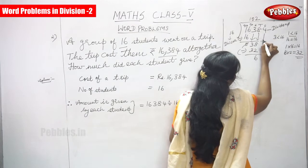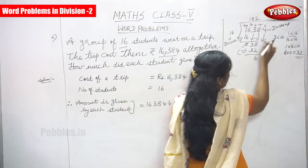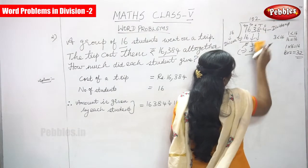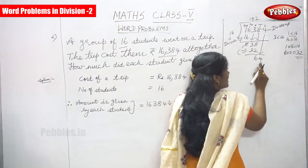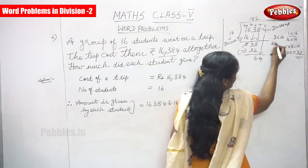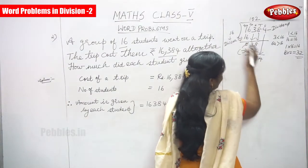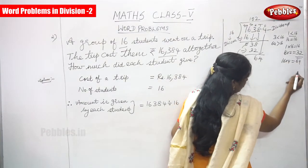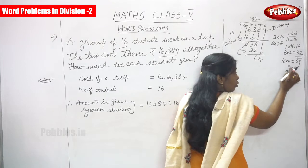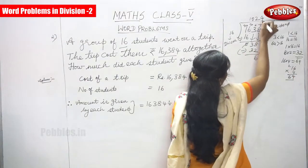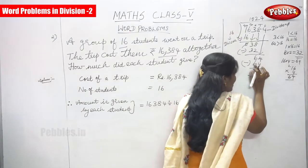Compare 6 with 16 — 6 is less than 16, so you can't divide. Bring down the next digit, which is 4. It becomes 64. Since 64 is greater than 16, we can divide. 64 divided by 16: 16 into 4 gives 64, because 4 times 6 is 24 — carry 2 — then 4 times 1 is 4, plus 2 is 6. That is 64. Subtract: 64 minus 64 equals 0.